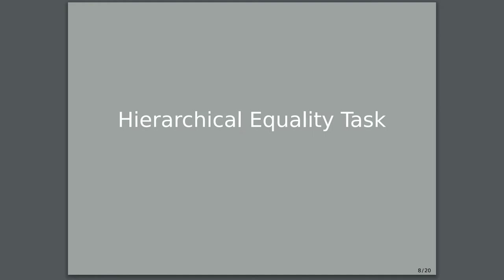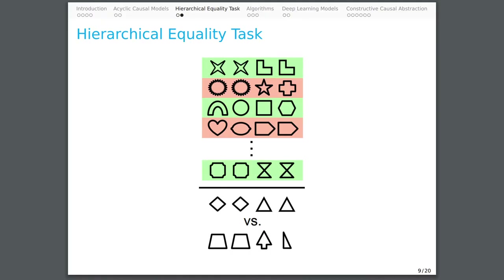In our running example, we will be analyzing a neural network trained on a hierarchical equality task to determine whether it implements a tree-structured algorithm that solves the same task. We define the hierarchical equality task as follows: the input is two pairs of objects, and the output is true if both pairs contain the same object, or if both pairs contain different objects, and false otherwise. For example, AABB and ABCD are both labeled true, while ABCC and BBCD are both labeled false.